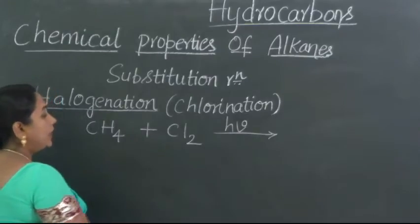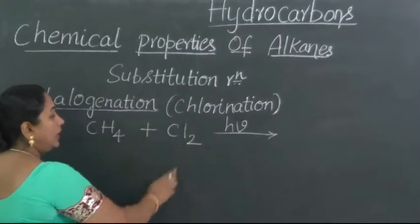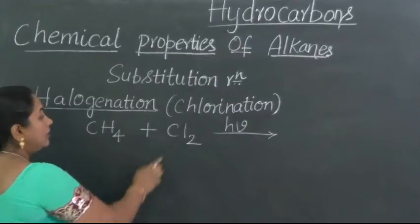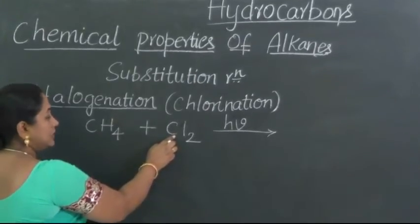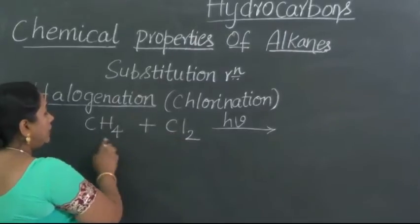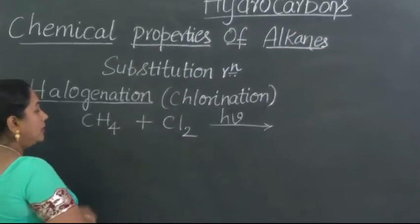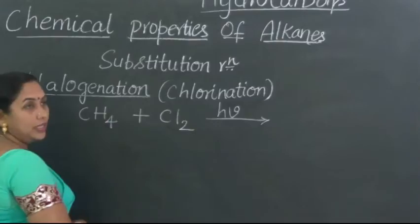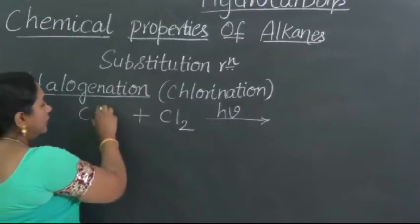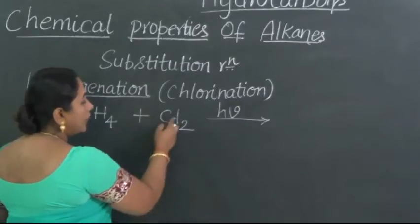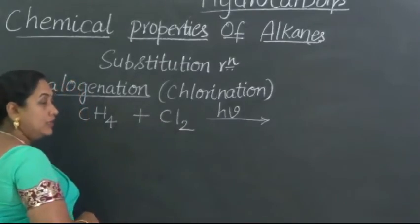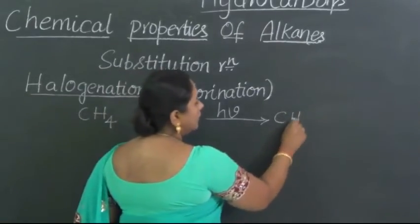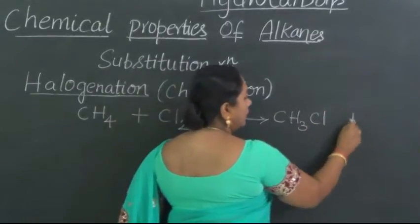So now what happens? In presence of diffused sunlight, this chlorine molecule splits up into free radical. One chlorine free radical which is obtained by the splitting will attack the methane molecule and will remove the hydrogen from the methane. In the place of hydrogen, it will take the attachment. The coming out hydrogen will combine with one more Cl which is present forming HCl. So the products obtained are CH3Cl plus HCl.